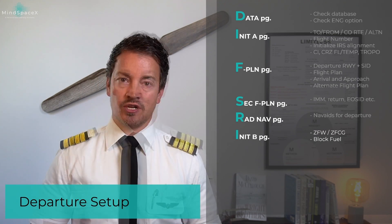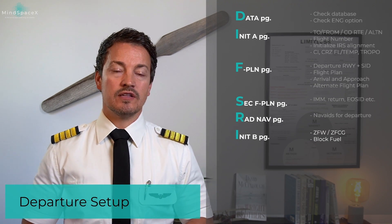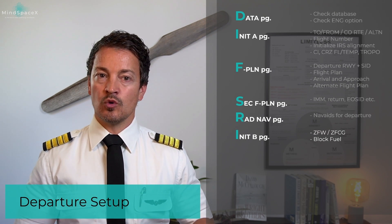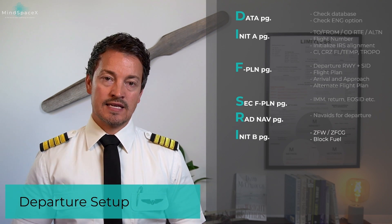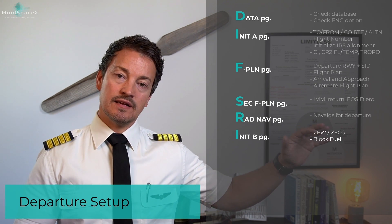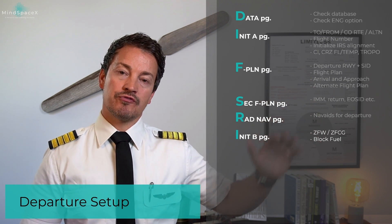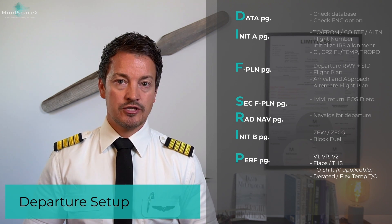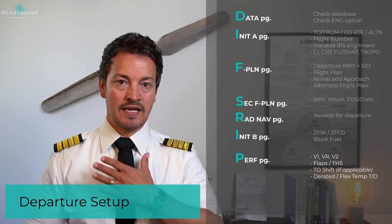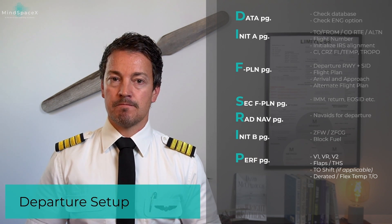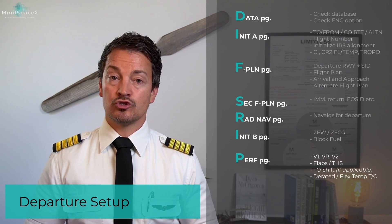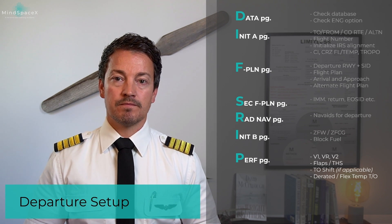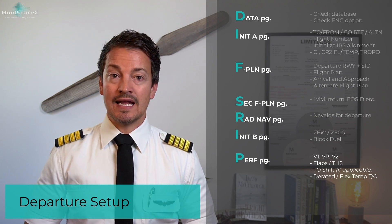Then we have Init B. The loading should have been completed — we should have the fuel on board and the passenger final manifest. This allows us to put in zero fuel weight, zero fuel CG, and block fuel as put on the aircraft. Once this is in, the aircraft is capable of calculating all performance for the flight plan and secondary flight plan. The performance pages allow us for departure to set up the takeoff page with V1, VR, and V2 as calculated by the pilots based on the actual conditions outside, the selected flap setting, trimmable horizontal stabilizer setting, any takeoff shift from the runway we're taking off from, as well as derated or flexible values for a less than full power takeoff.